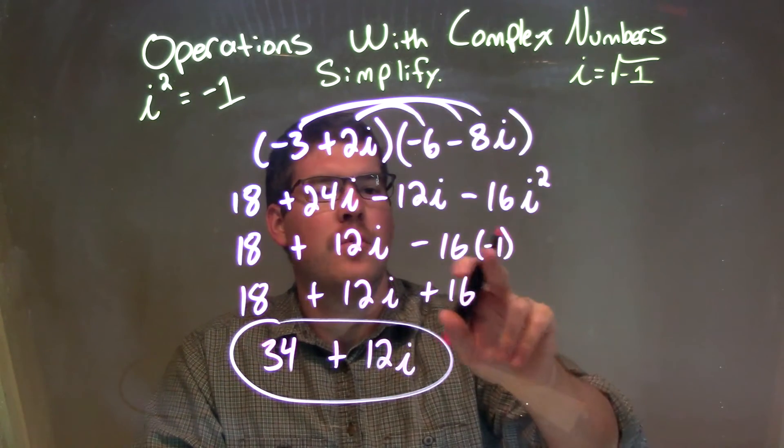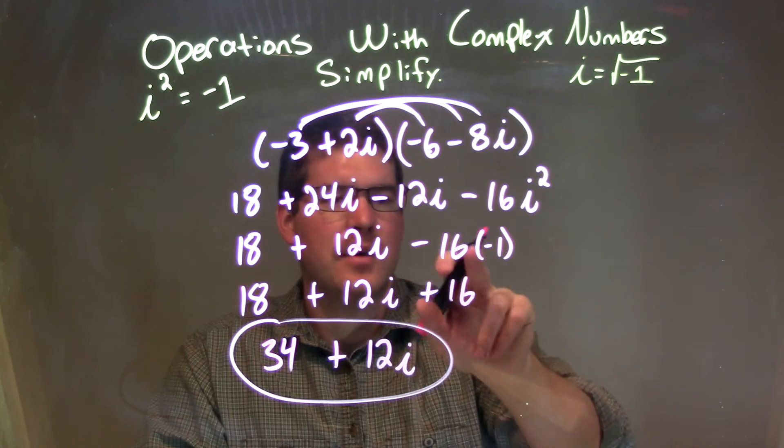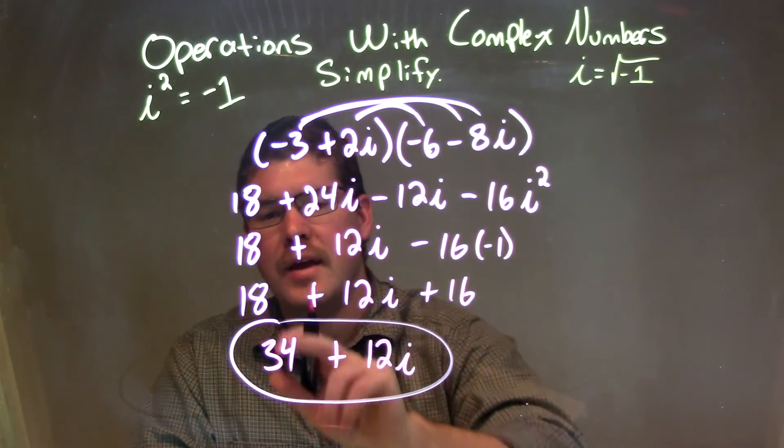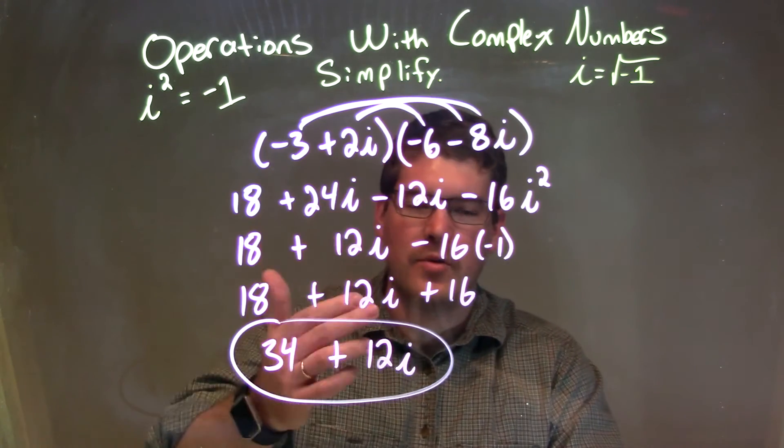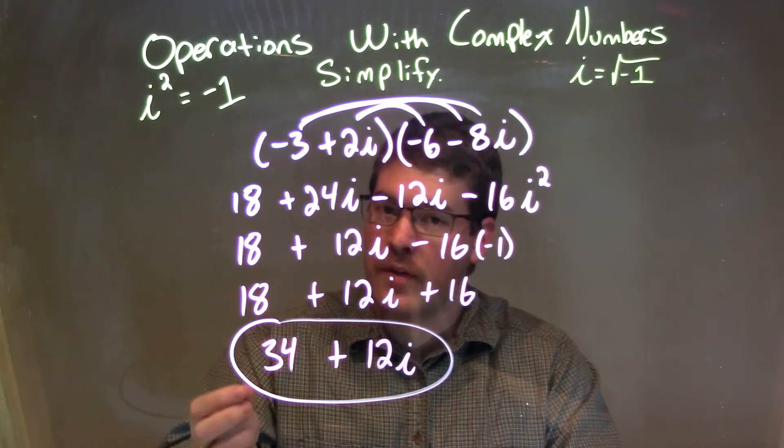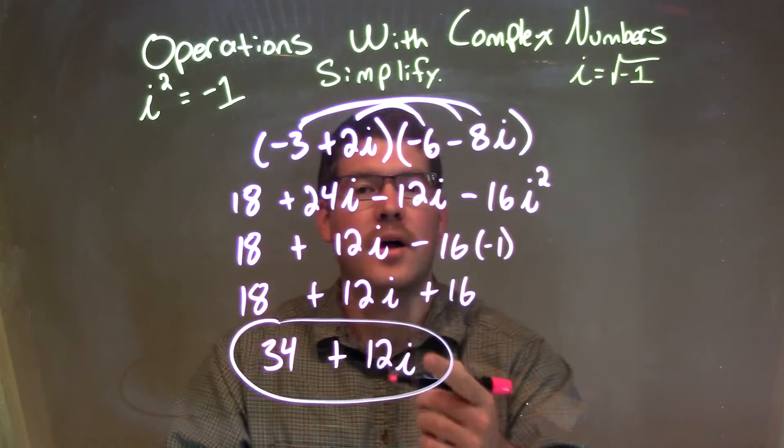Negative 1 times negative 16 makes us a positive 16. 16 plus 18 was 34. We brought down the 12i, giving us, again, our final answer of 34 plus 12i.